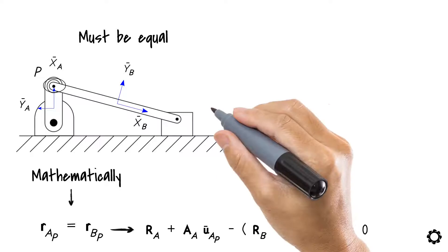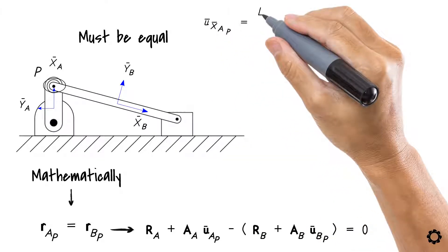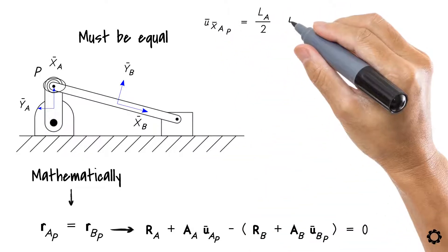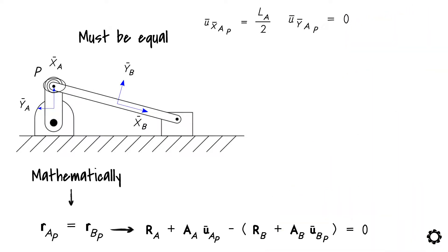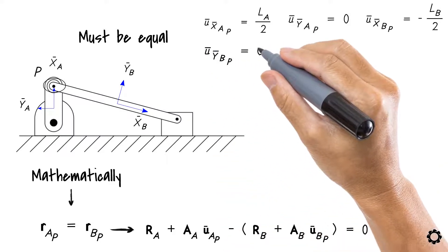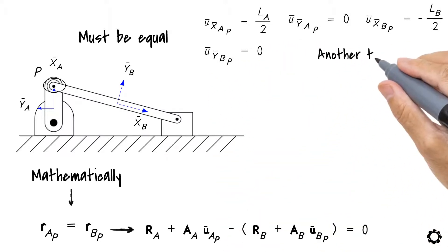Again, considering that U-bar X-bar AP equals LA by 2 and U-bar Y-bar AP equals zero, and U-bar X-bar BP equals minus LB by 2 and U-bar Y-bar BP equals zero, we get another two constraint equations.